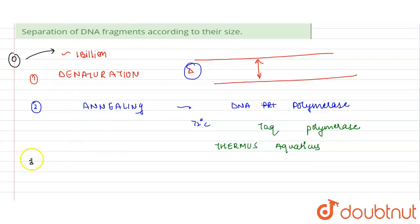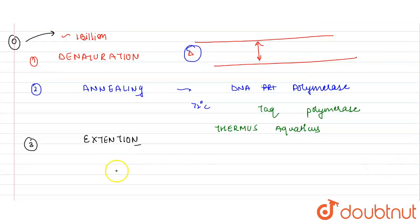The third step: after the annealing, we have separated DNA, we have attached a DNA polymerase. Now we have the extension. Extension will take place, and lastly amplification will take place. After this extension, amplification will take place.